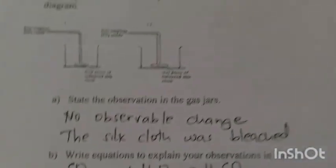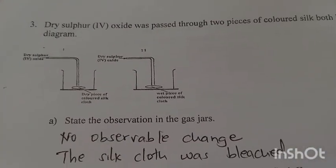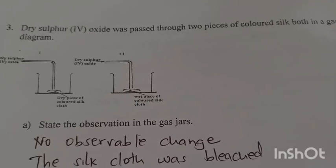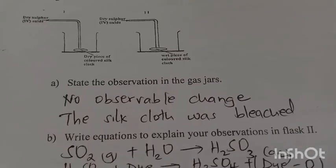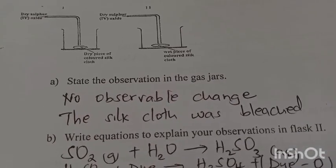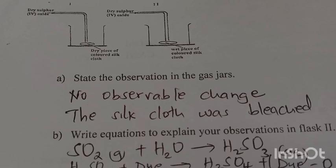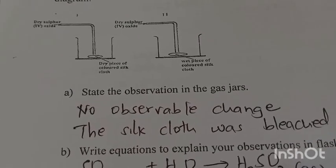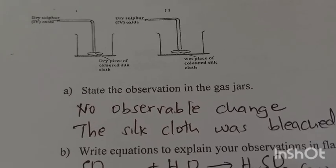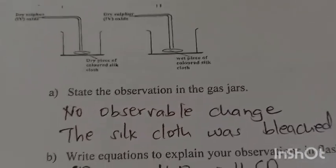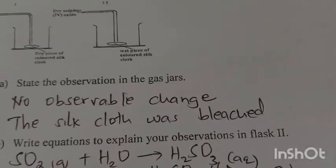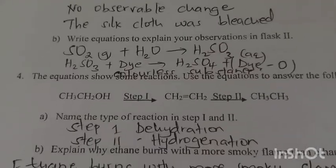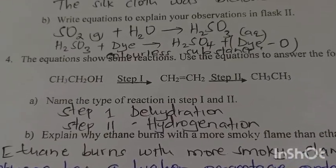During the experiment, dry sulfur dioxide was passed through two pieces of colored silk cloth in gas jars. State the observation in gas jar one. There is no observable change because you've used a dry piece of silk cloth. In experiment two, the silk cloth was bleached, meaning it turned colorless.